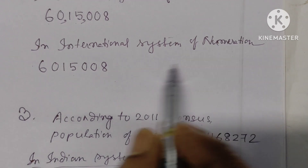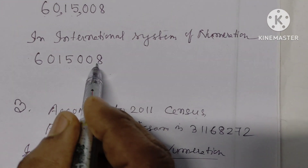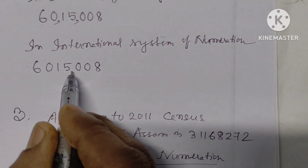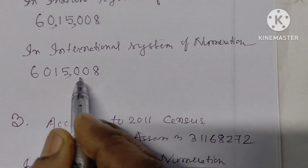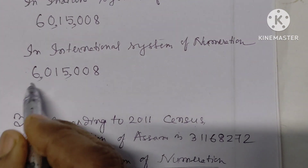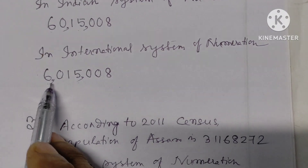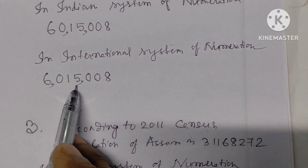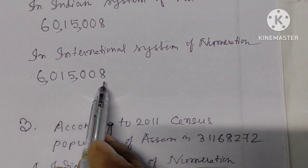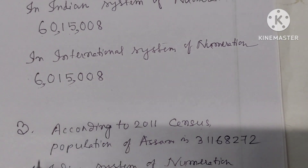In the international system of numeration, first comma after three digits from right to left, then three digits each time. For 60,15,008 in Indian system and 6,015,008 in international system.